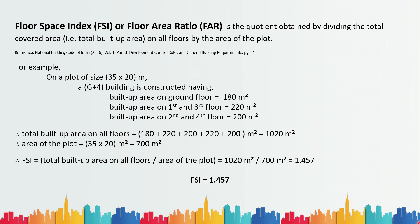FSI is important for a builder to calculate because each area has a limit to the FSI specified by the local municipal corporation. For example, if this building is in a place where the maximum FSI is 1.5, it is fine. But if the maximum FSI allowed is 1.4, this building may not be permitted to construct. So far we have covered built-up area and Floor Space Index. Let's now move on to carpet area.